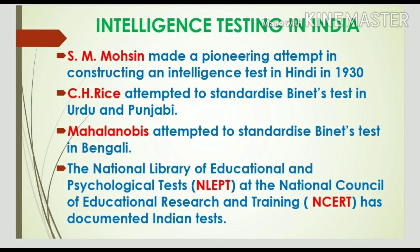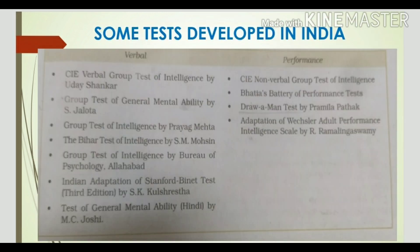Regarding intelligence testing in India, S.M. Mohsin made a pioneering attempt in constructing an intelligence test in Hindi in 1930. C.H. Rice attempted to standardize Binet's test in Urdu and Punjabi, while Mahalanobis attempted to standardize it in Bengali. Indian researchers also developed Indian norms for western tests including RPM, WAIS, Alexander's Pass Along Test, Cube Construction, and Koh's Block Design. Long and Mehta prepared a Mental Measurement Handbook listing 103 intelligence tests available in various Indian languages, documented in the national library of educational and psychological tests at NCERT.